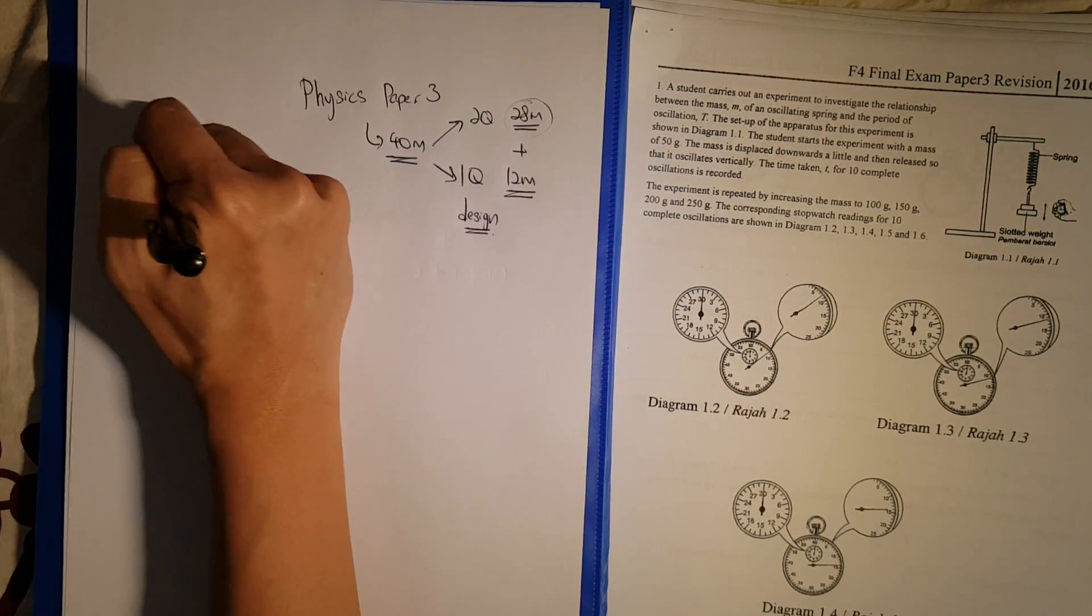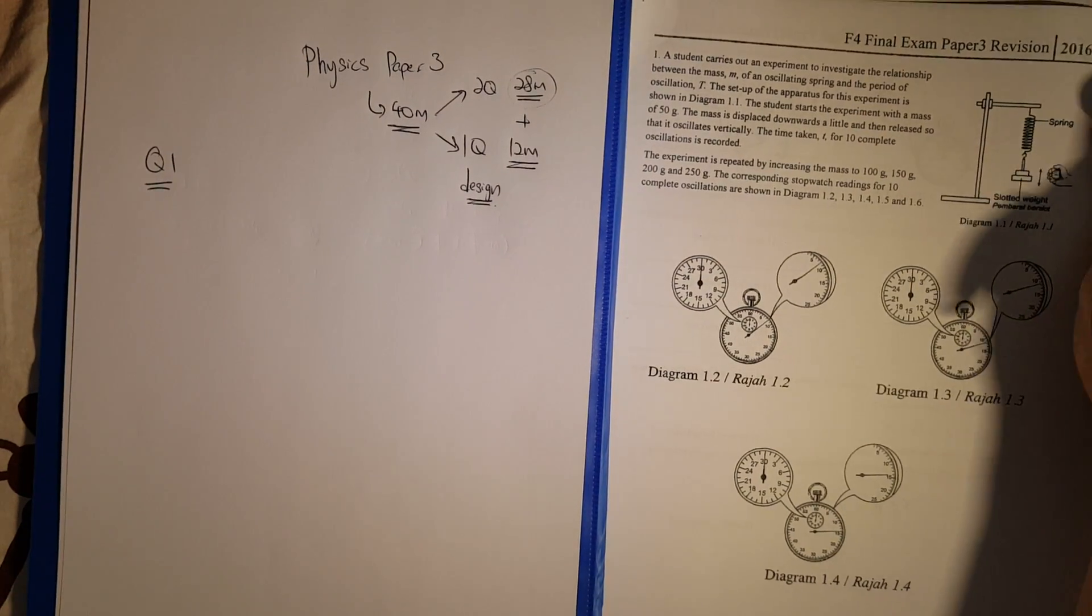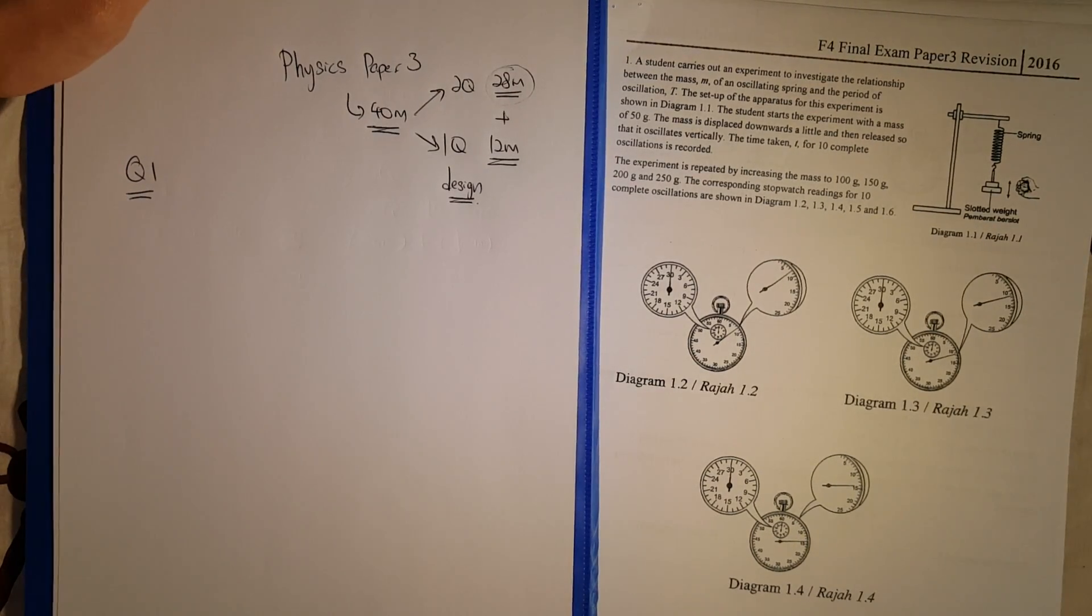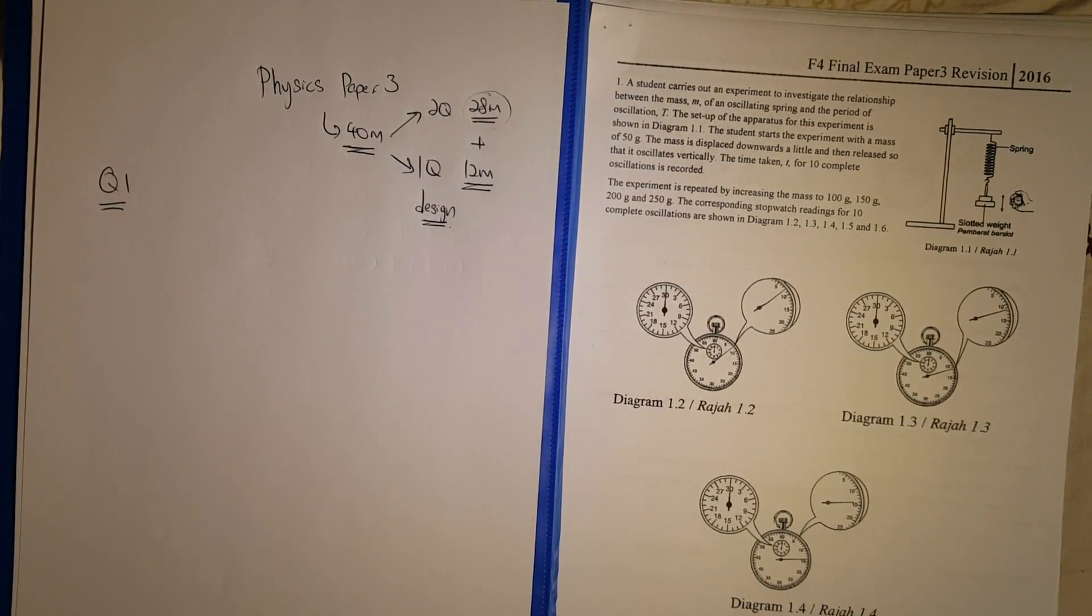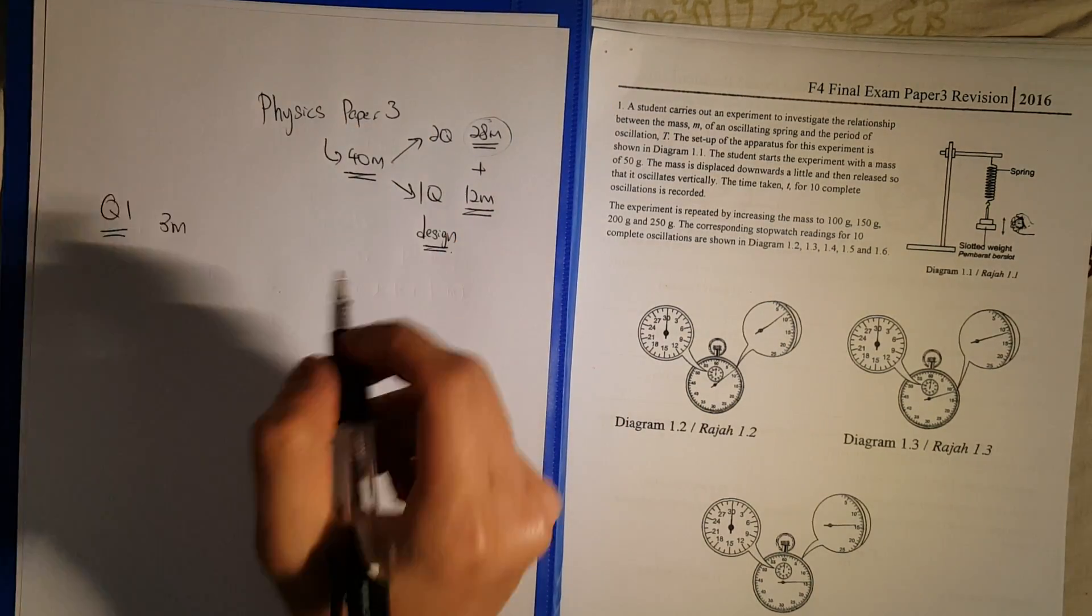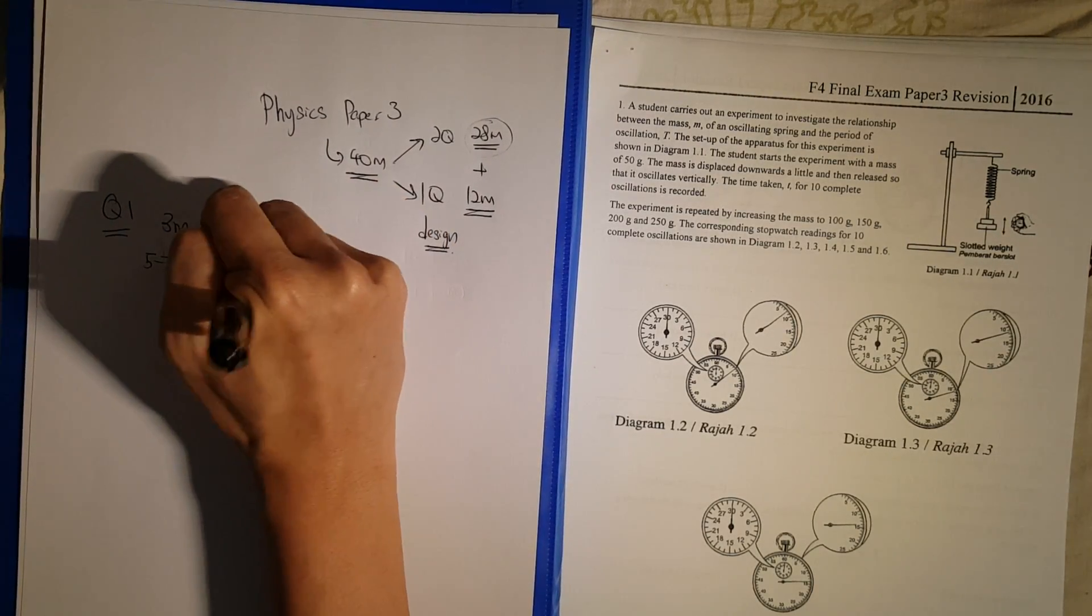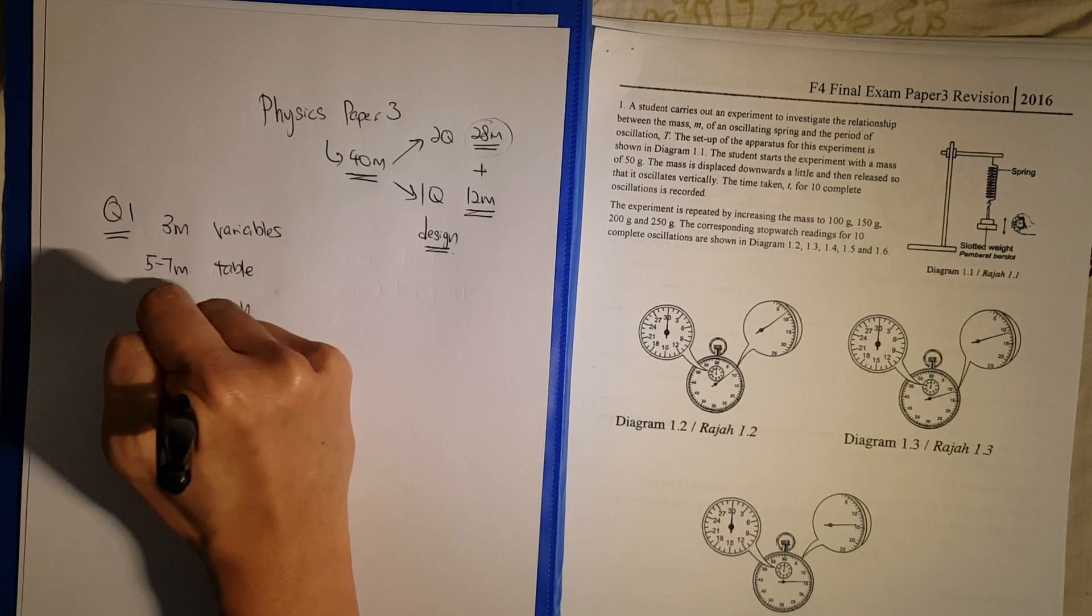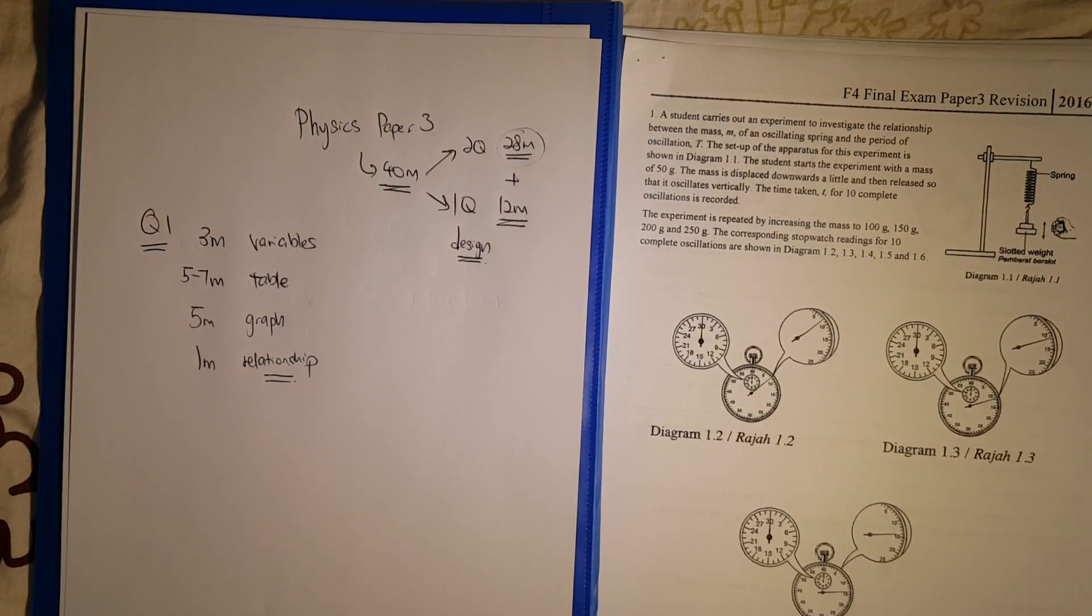Question 1 will normally consist of you have to know how to take readings. As you can see in this paper, you need to learn how to take readings from a stopwatch. Basically what can happen here is there are a series of questions. You have to draw a table and draw a graph. Let me go through the marks that they will allocate. Three marks will be on writing of variables, you will have five to seven marks on the table side, five marks on the graphical side, and basically another one mark on stating the relationship.